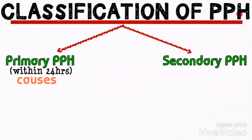Causes of primary postpartum hemorrhage are categorized into four T's. The first T is atony or tone. This is the inability of the uterus to contract during delivery.